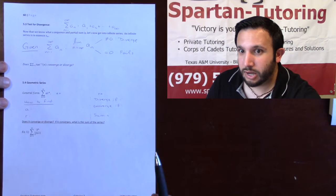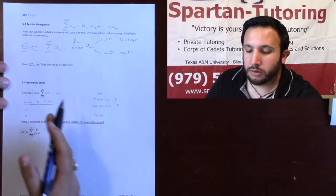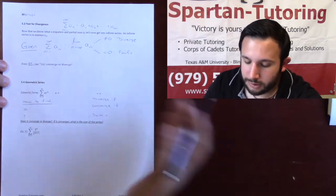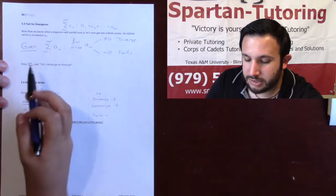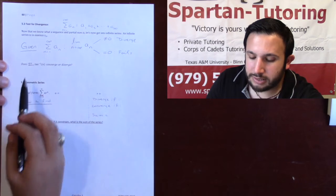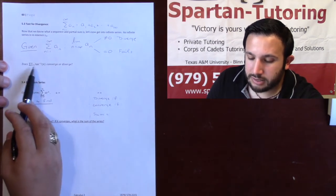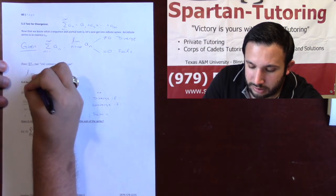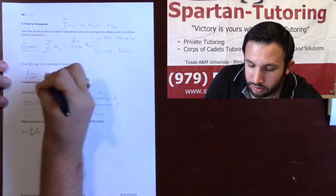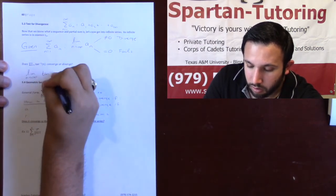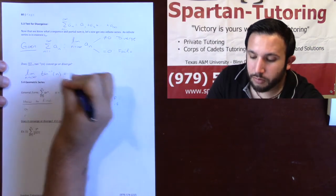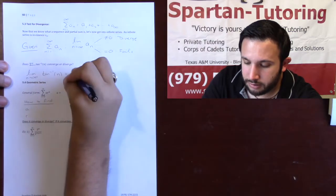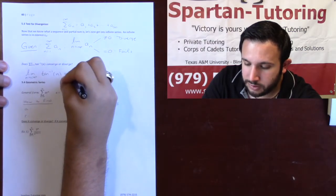The rest of this chapter is going to be about determining whether an infinite sum will converge or diverge. Anyway, the test for divergence is nice and easy. The first question they ask us is: does the sum of arctangent of n converge or diverge? So all you would do is take the limit as n goes to infinity of the arctangent of n. And if you remember back from improper integrals, the arctangent as x goes to infinity goes to π/2.